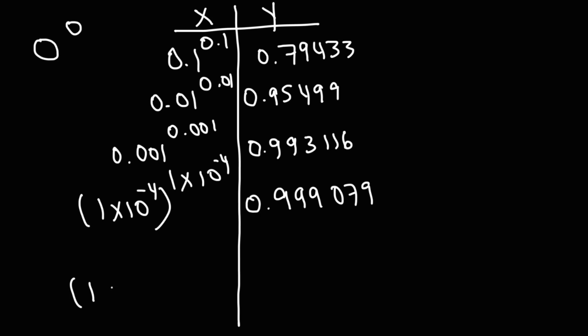Now let's try a very small number. Let's say 1 times 10 to the minus 9. Maybe that's too small. Let's say 1 times 10 to the minus 7 raised to the 1 times 10 to the minus 7. This is 0.999998.